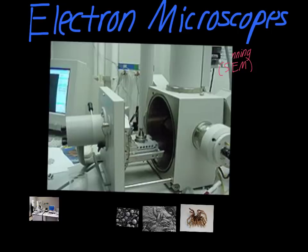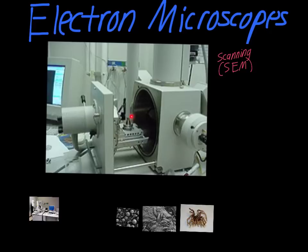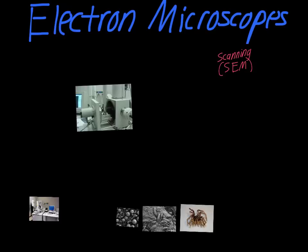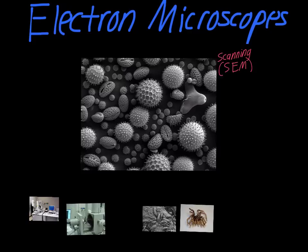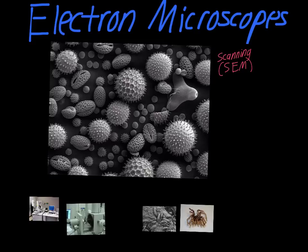To get a look at the actual chamber where scientists are putting the specimens — keep in mind this has to be inside a vacuum — there's a special chamber where they place the individual specimen. An example of something scientists might look at under a scanning electron microscope is a sample of different pollen grains. Anybody who has allergies can imagine these are the things irritating your eyes, nose, and throat, and it's easy to see why — they have all those little spines on the outside to help them stick to things.